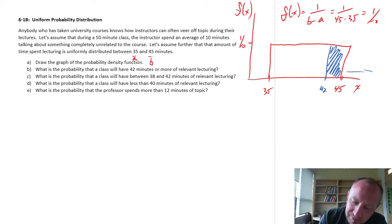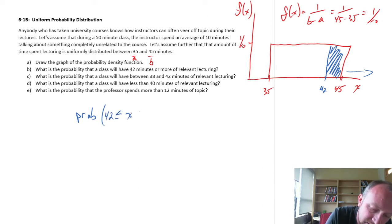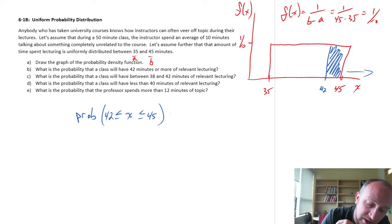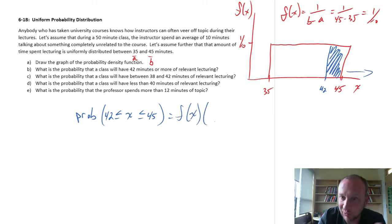So saying 42 minutes or more is just like asking us what's the probability that x is greater than or equal to 42 or less than or equal to 45, because 45 is the maximum value that exists within this distribution. So this can be obtained by calculating f(x) times the width of that interval, b minus a. In this case, b is 45, a is 42.